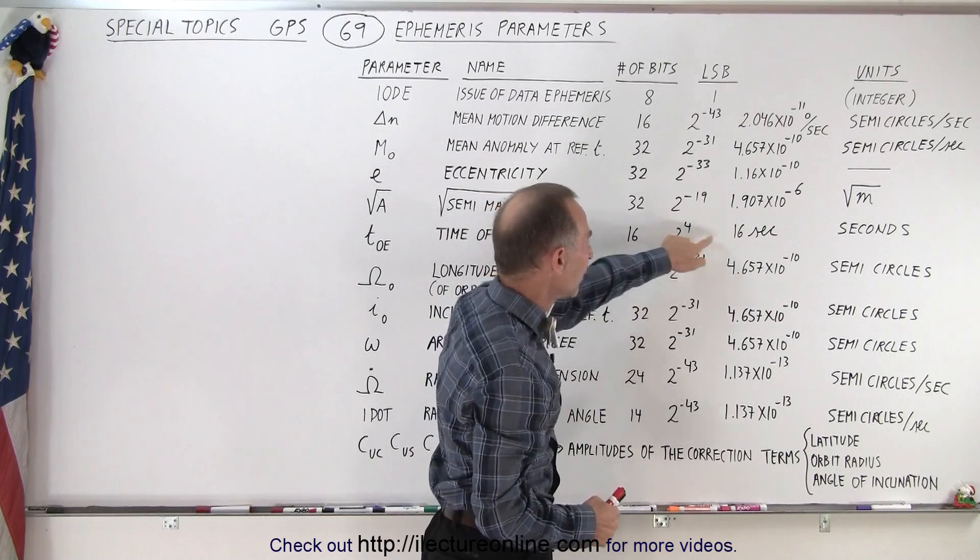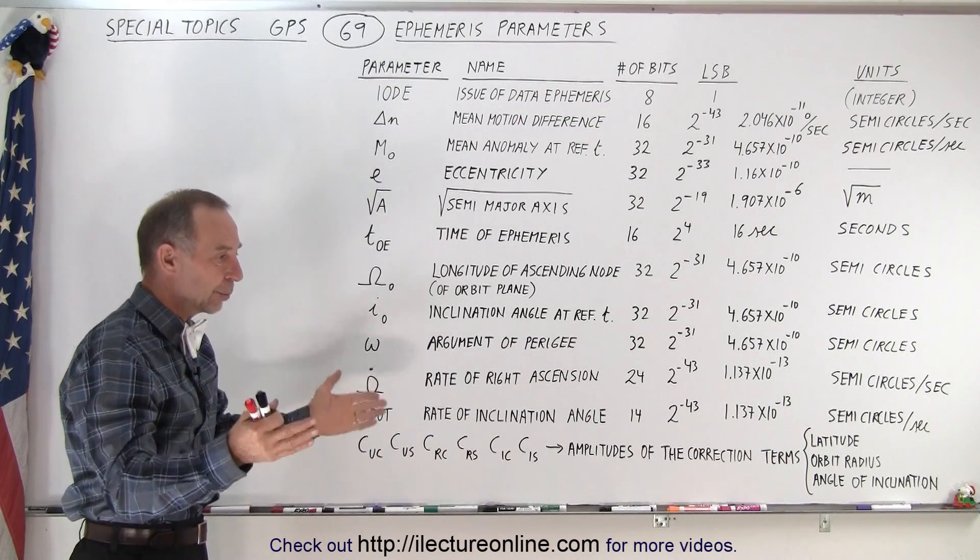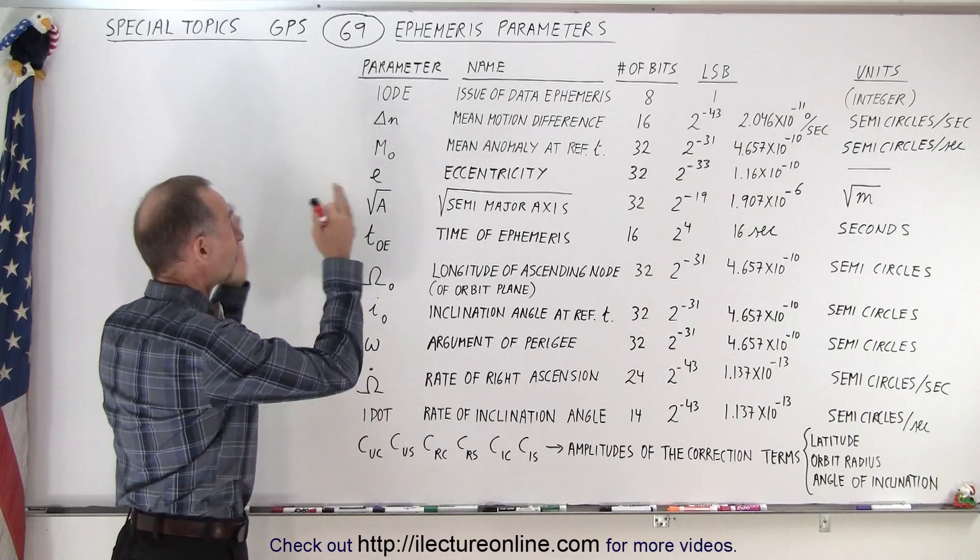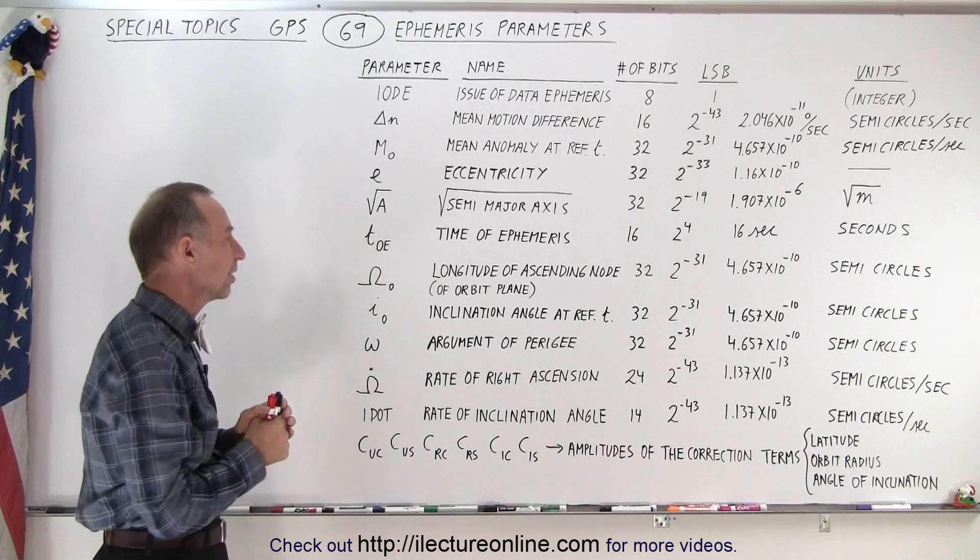Notice we only have 16 bits associated with it. 2 to the 4th is the LSB which is a 16 second period. So we're not looking for accuracy here. We're simply saying, are we dealing with the same time period such that we're dealing with the correct issue of data ephemeris? In other words, the right data ephemeris data set.